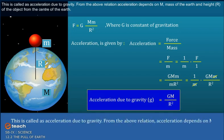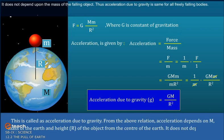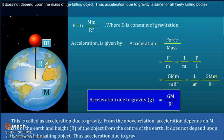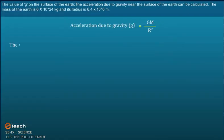From the above relation, acceleration depends on M, the mass of the Earth, and R, the distance from the Earth's center. It does not depend upon the mass of the falling object. Thus, acceleration due to gravity is the same for all freely falling bodies.